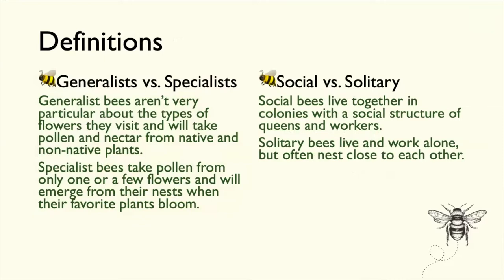Generalist bees go to all kinds of flowers — they don't care. Most of our native bees are generalists. But there are a few specialists — bees that only go to certain plants. The squash bee is one of our specialists in Delaware; it only pollinates squash and pumpkins. It's very important to support squash bees if you want those crops pollinated.